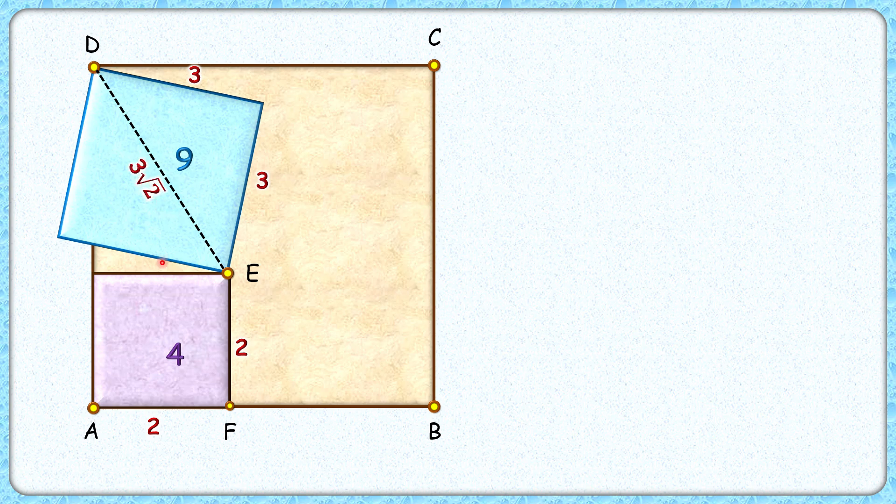Now here comes the magic. Let's draw the diagonal of the brown square. By symmetricity, it will pass through point E. If you consider AC as a mirror, then the mirror image of vertex D will be vertex B.